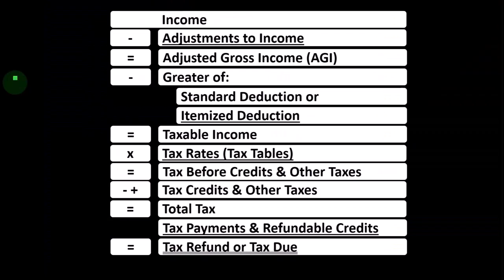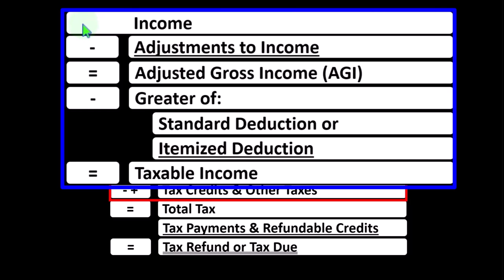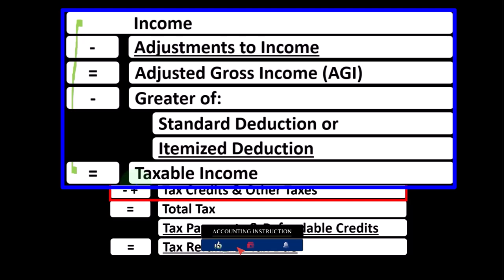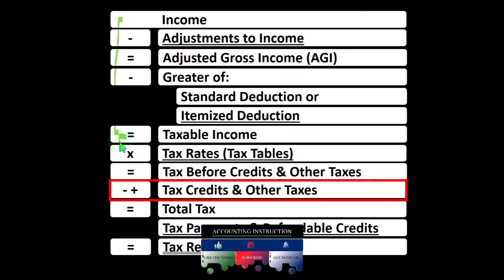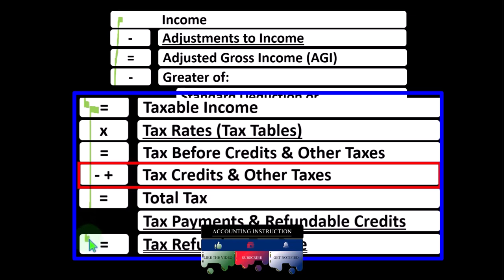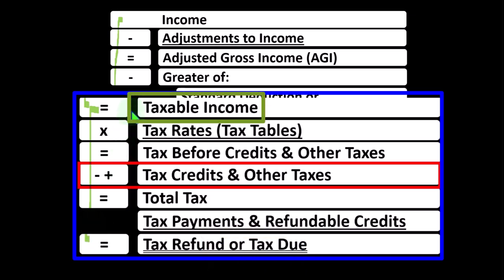We're at the bottom part of the income tax formula where the credits live. The first half of the income tax formula is basically a funny income statement, with taxable income as the bottom line. The second half of the formula starts by taking that taxable income and calculating the tax based on it, using a progressive tax system.